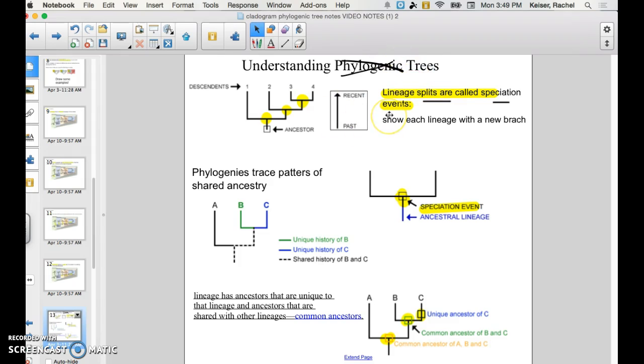So when you're looking at cladograms, these certain lineage splits are called speciation events. And it shows when certain species branched off and evolved into different species. But they all share a recent common ancestor.